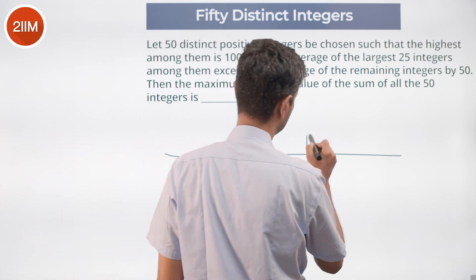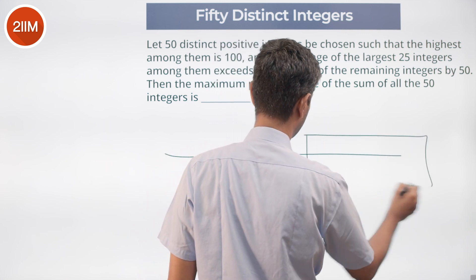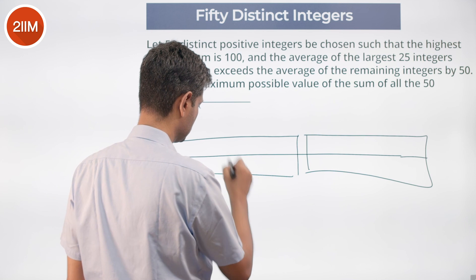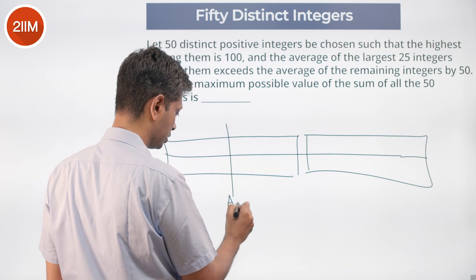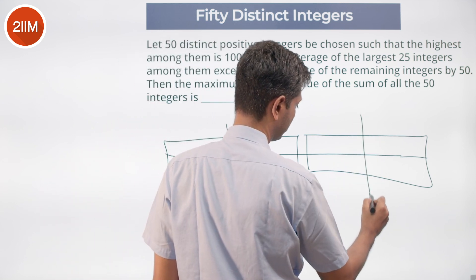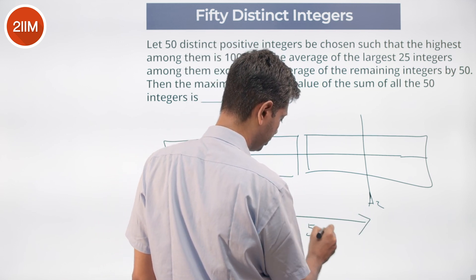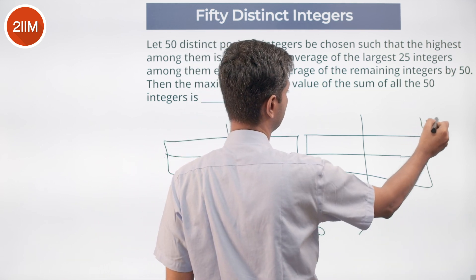Top 25 are here, bottom 25 are here. This will be some average, this will have some average. This difference is 50. Largest among these is 100.